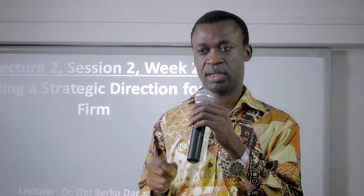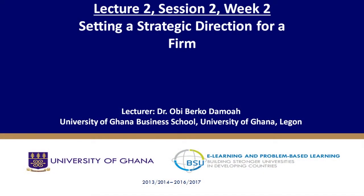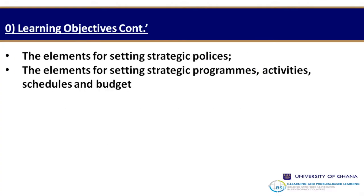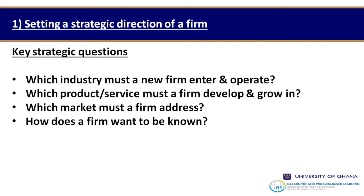To make it easy for an organization to know what direction to set, there are a number of key strategic questions that it must address. For example, for a commercial or for-profit organization: which industry must a firm operate in? This has a lot of implications — why this industry and not another, why this sector and not another?